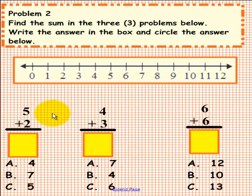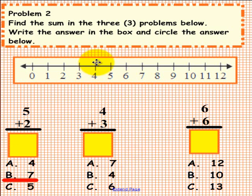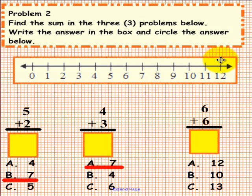Let's see what we have for the first one. We have 5 plus 2. Let's look at the number 5 and we are going to jump over two spaces: 1, 2. So 5 plus 2 must be equal to 7. Let's look at number 2. We are going to start at 4 and jump three spaces: 1, 2, 3. So 4 plus 3 equals 7. And the last one, we have 6 and we are going to jump 6 spaces: 1, 2, 3, 4, 5, 6. So 6 plus 6 is equal to 12.